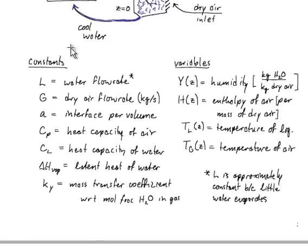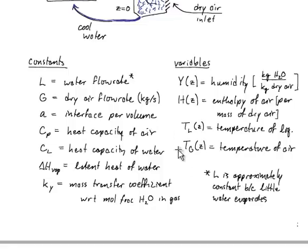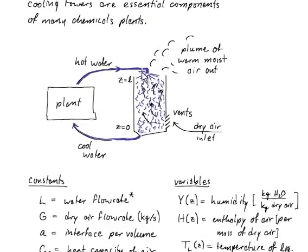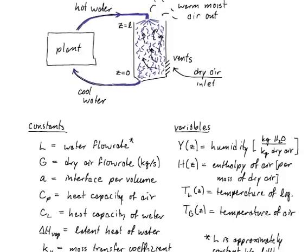The important variables in this problem are the humidity of air — kilograms of water per kilogram of dry air — the enthalpy of air per unit mass of dry air, the temperature of the liquid water stream flowing down, and the temperature of the air flowing upward. We assume water flow rate is constant, since only a small fraction of the water evaporates out, and textbooks confirm this is a good approximation.